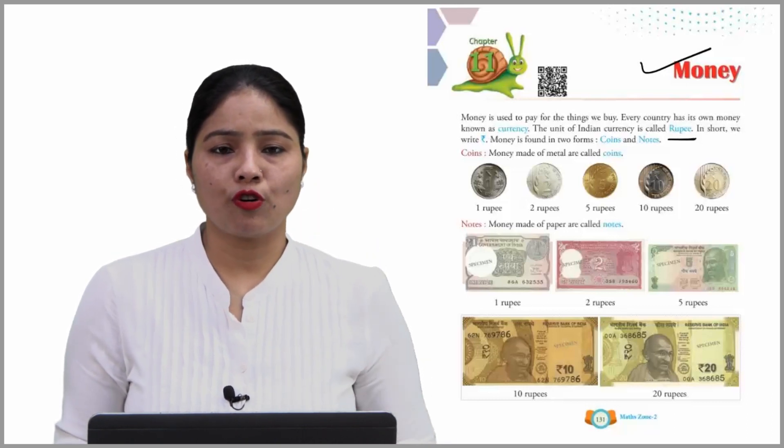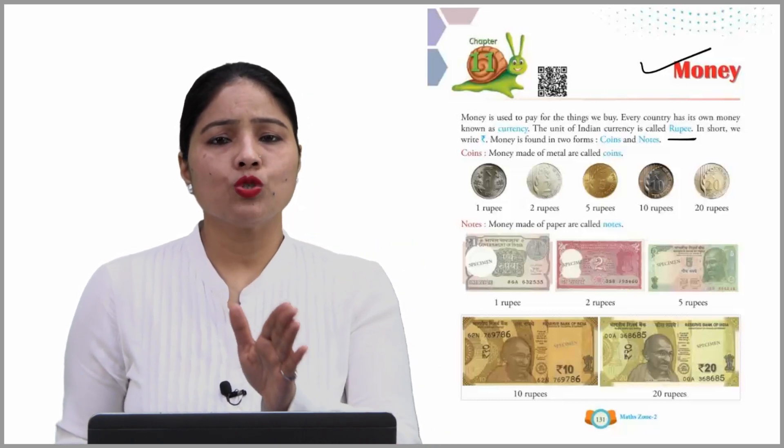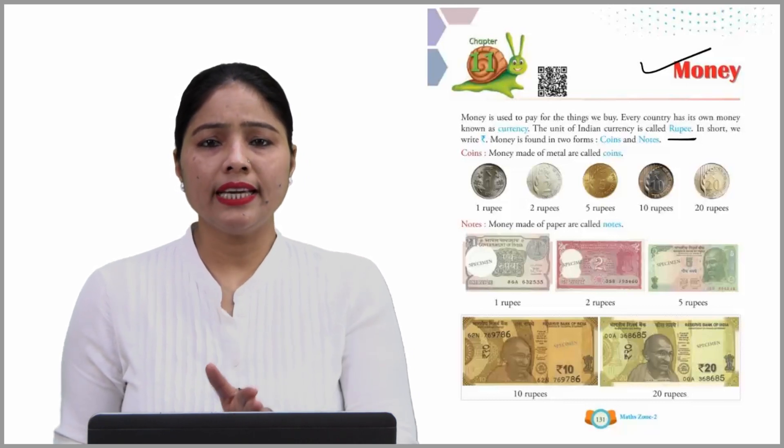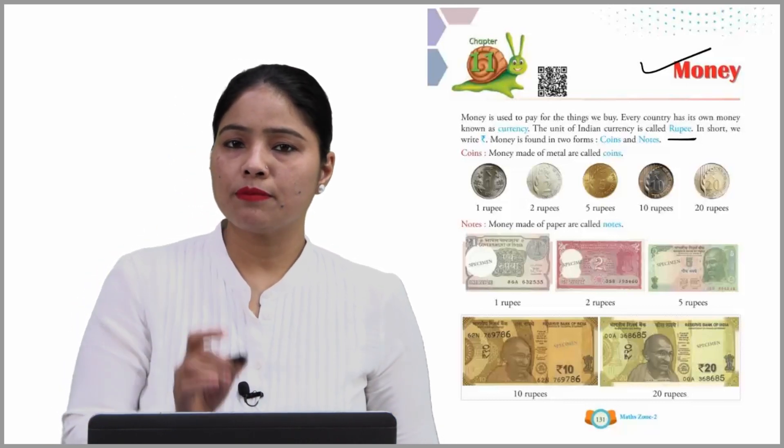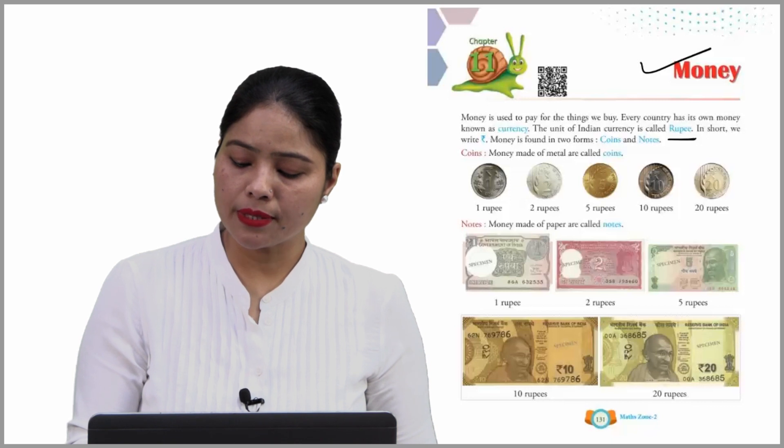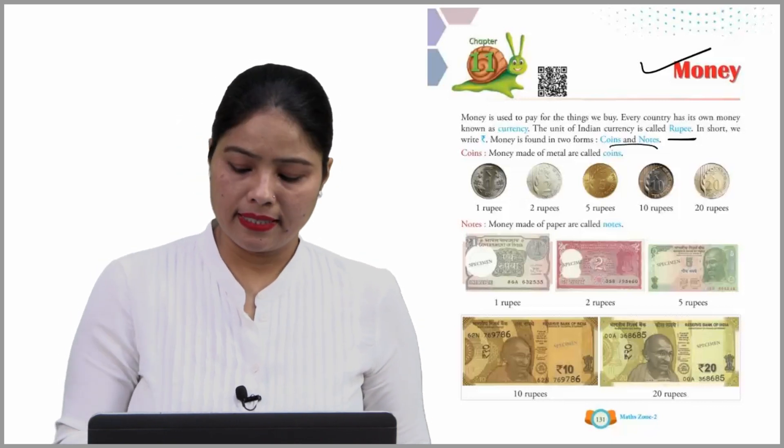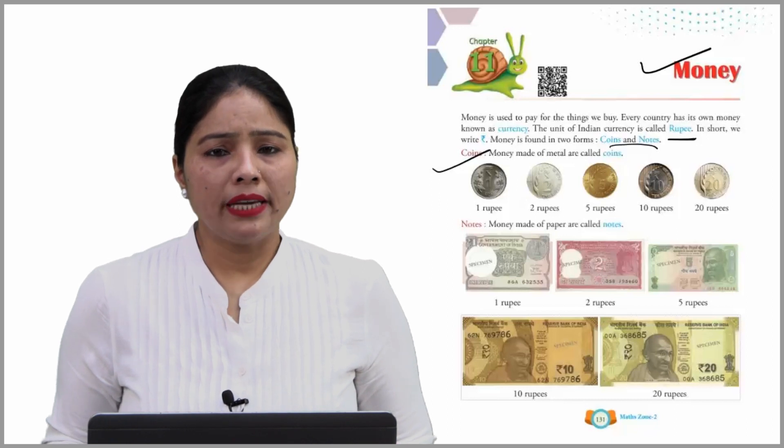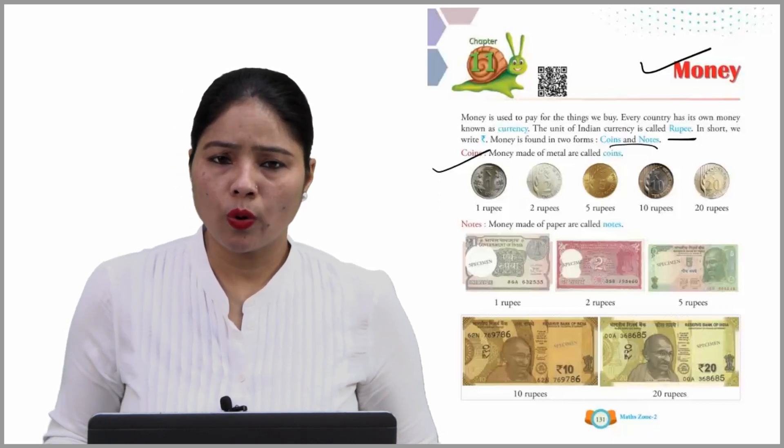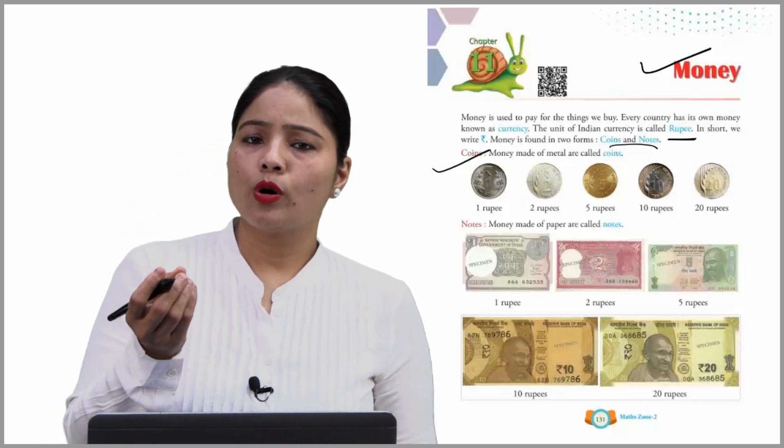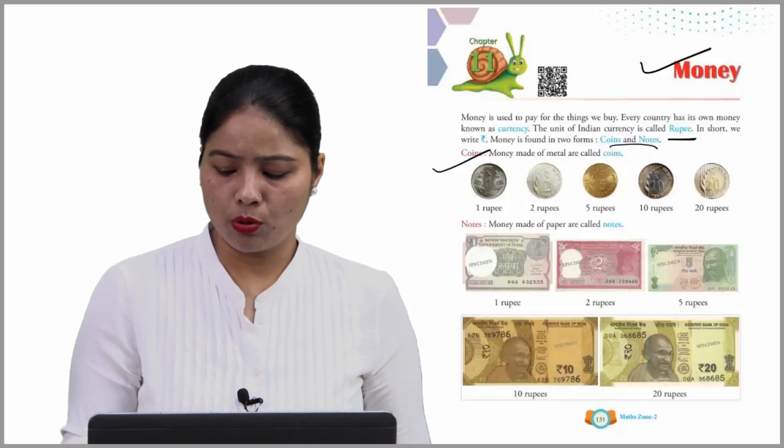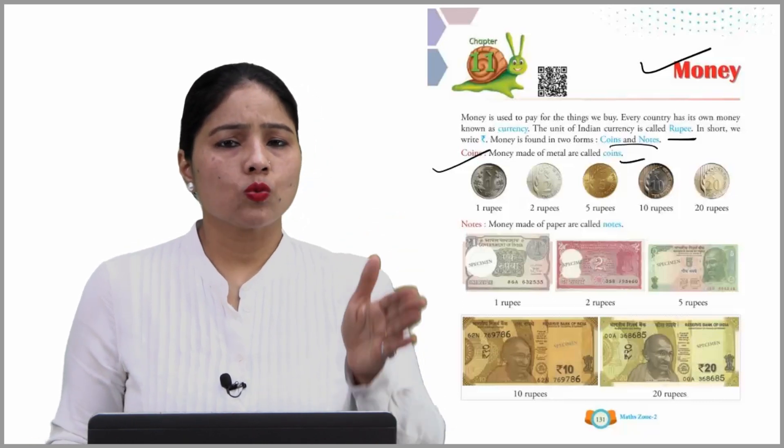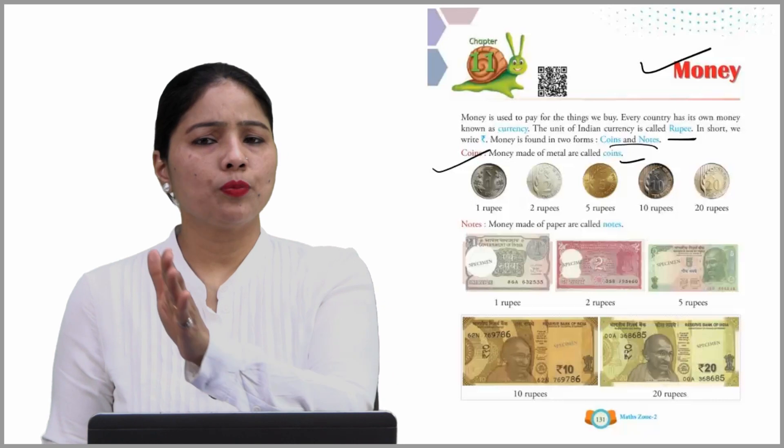Money is found in two forms: coins and notes. Coins - money made of metal are called coins. So coins are made of metal. This is one rupee, two rupees, five rupees, ten rupees, twenty rupees, and so on.